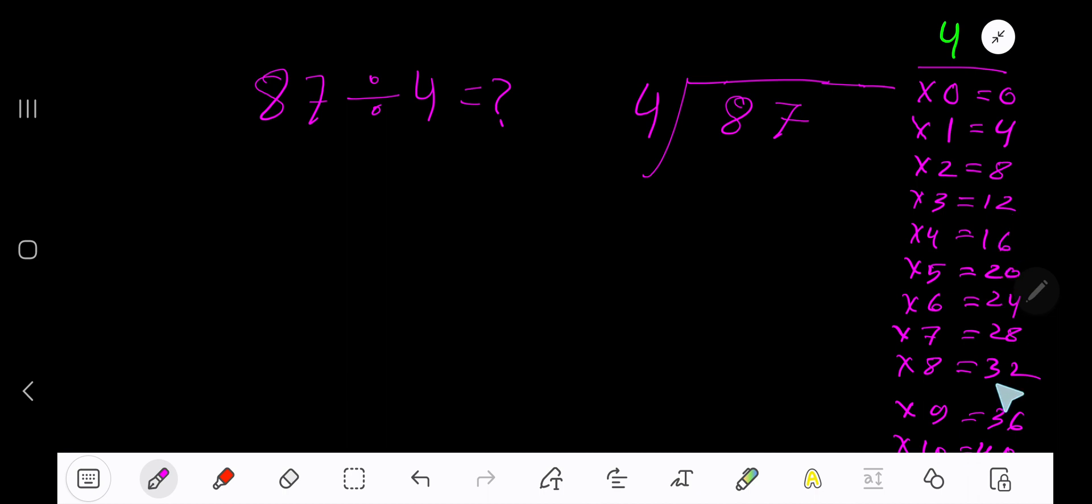This process will continue. 4 goes into 8 how many times? 4 goes into 8 two times. Write 2. 2 times 4 is 8. Subtract, bring down the next digit 0, 7.